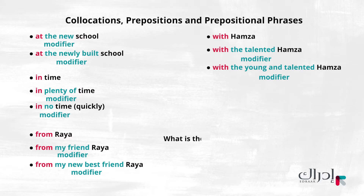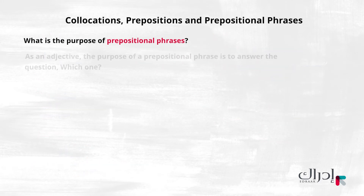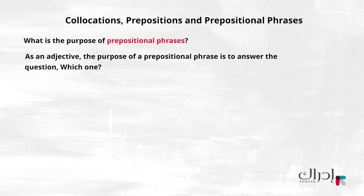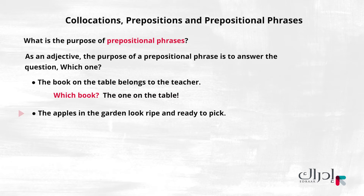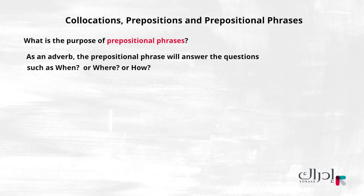What is the purpose of prepositional phrases? As an adjective, the purpose of a prepositional phrase is to answer the question 'which one?' Look at these examples: 'The book on the table belongs to the teacher' — which book? The book on the table. 'The apples in the garden look ripe and ready to pick' — which apples? The ones in the garden.